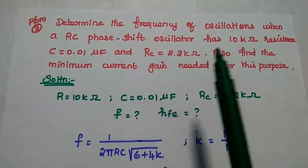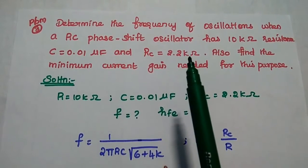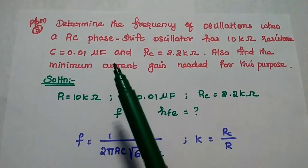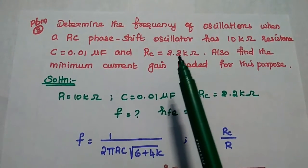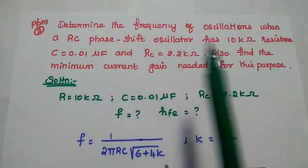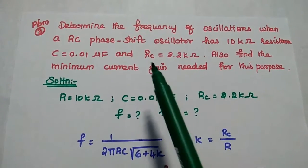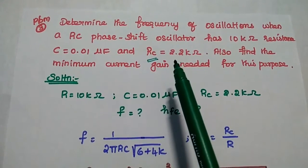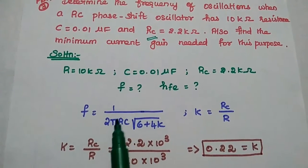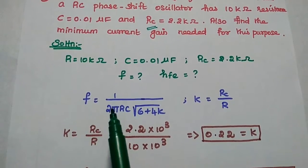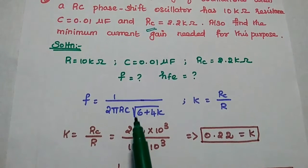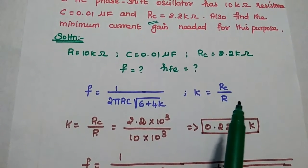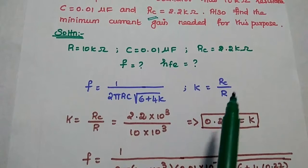Next problem: determine the frequency of oscillations when an RC phase shift oscillator has 10 kilo ohm resistance, C is equal to 0.01 micro farad, and RC is equal to 2.2 kilo ohm. Also find the minimum current gain needed. Here they have given us the RC value, so we use the formula F is equal to 1 by 2 pi R into C square root of 6 plus 4K, where K is the collector resistance to the resistance of the feedback network, RC by R.